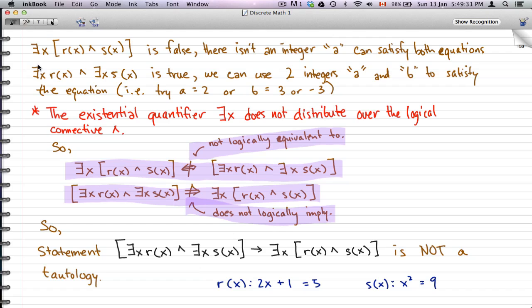But if we expanded this statement such that there exists an x where R(x) and there exists an x where S(x), well this equation is true. We can use two integers a and b to satisfy this equation. If you tried a equals 2 or b equals 3 or negative 3, then you'd get the truth of this statement.